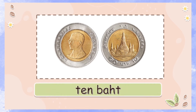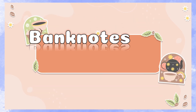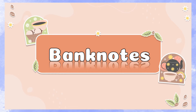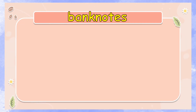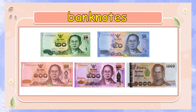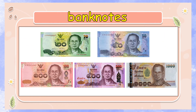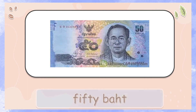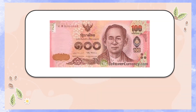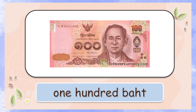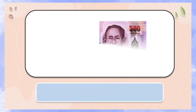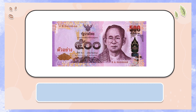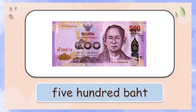Banknotes. Here are some examples of banknotes. It is a piece of printed paper that has a particular value as money. 20 baht — it is green in color. 50 baht — it is blue in color. 100 baht — it is red in color.